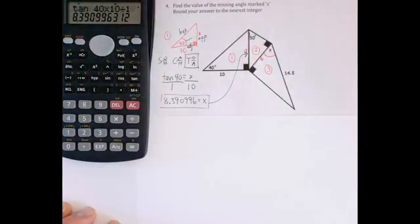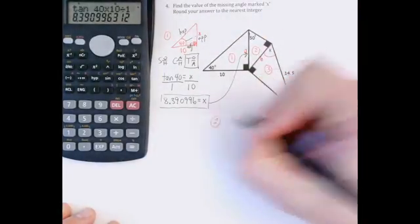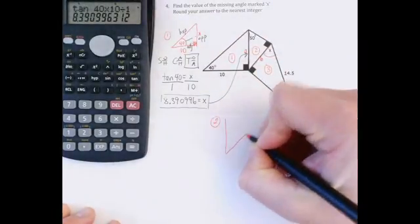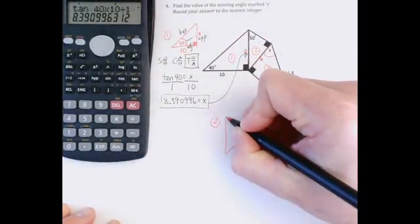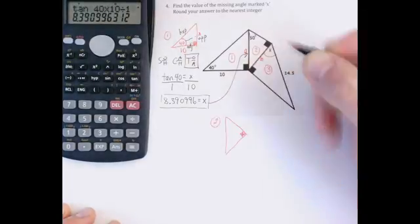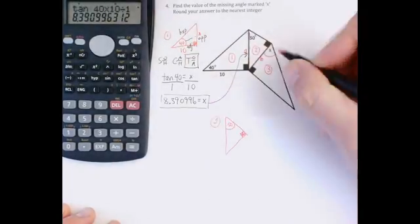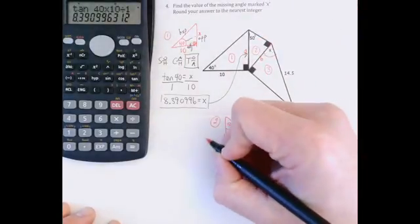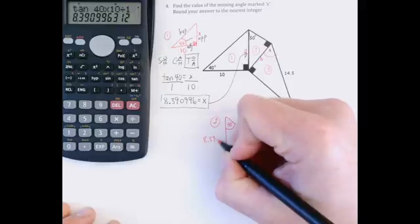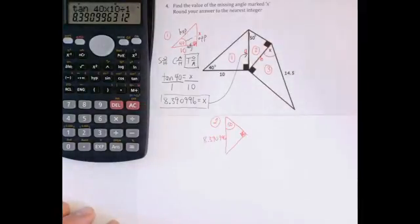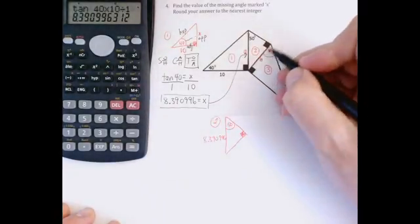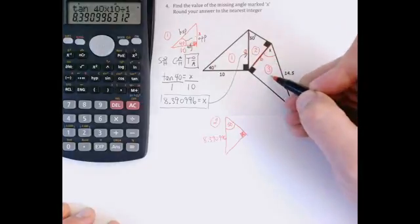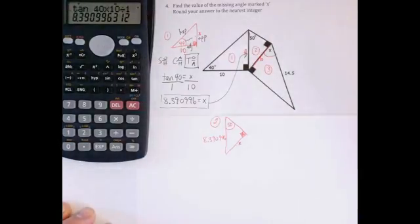So if I come around to work in triangle two now, and I'll redraw it so it's a little bit easier, there's my right angle. This one's given as 50 degrees. That's this right here. This side I now know is 8.390996. And now what I'd be looking for is this side here that's shared between triangle two and triangle three. And that's this spot, this side right here.